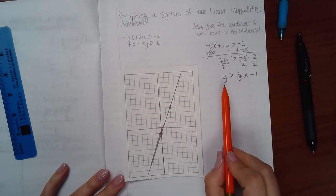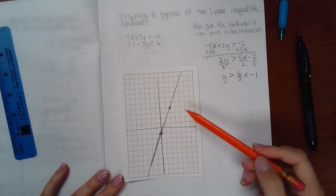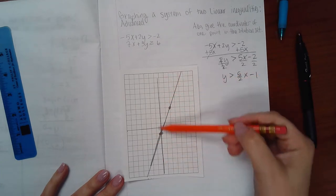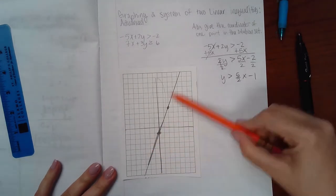Then I need to shade where the y values are greater than this line. We're looking at the line and the y values that are greater than that line, so this would be the region that I shade for the top problem.